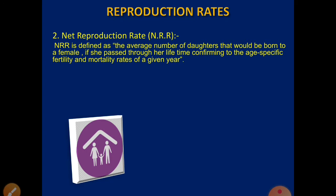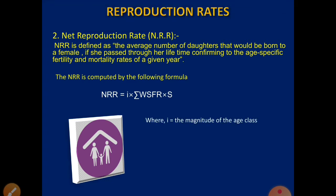In its calculation, we also take into account mortality. Both GRR and NRR will be equal when all the newly born daughters reach the childbearing age. NRR is calculated by the formula: NRR = I × Σ(WSFR × S), where I stands for the magnitude of the age class, WSFR means female births divided by female population into 1000, and S stands for survival rates.